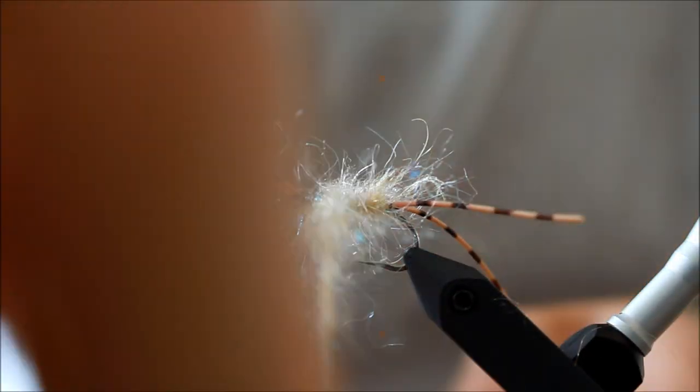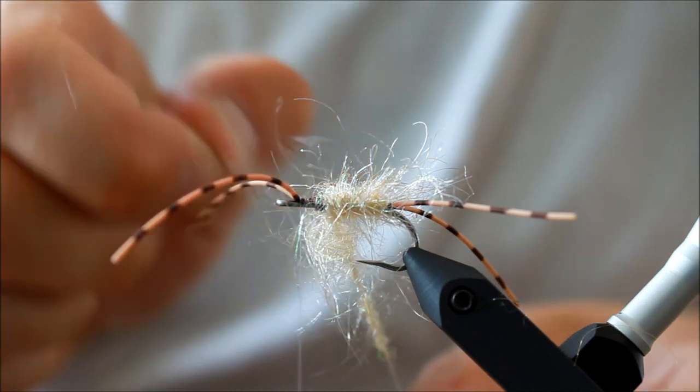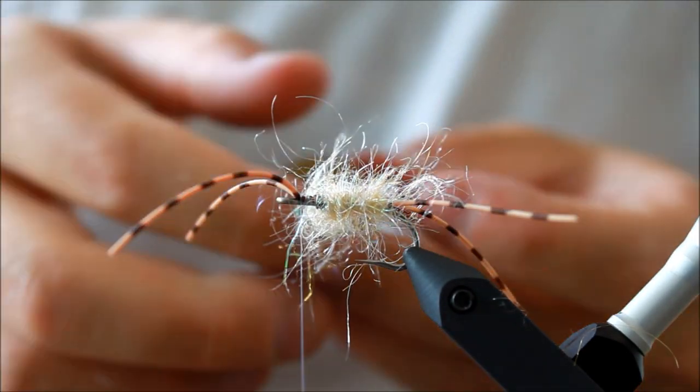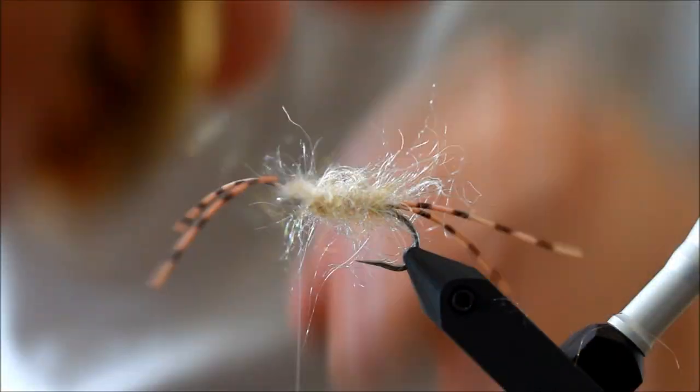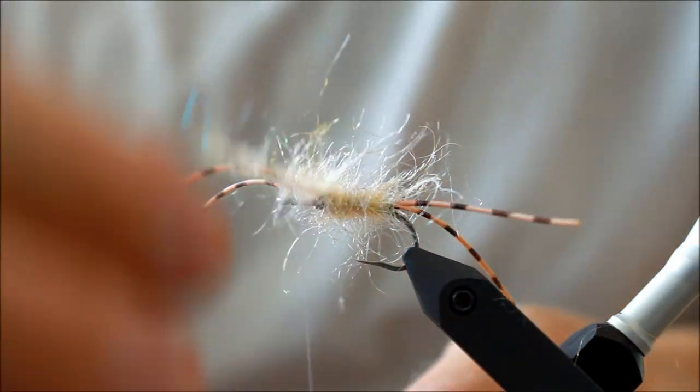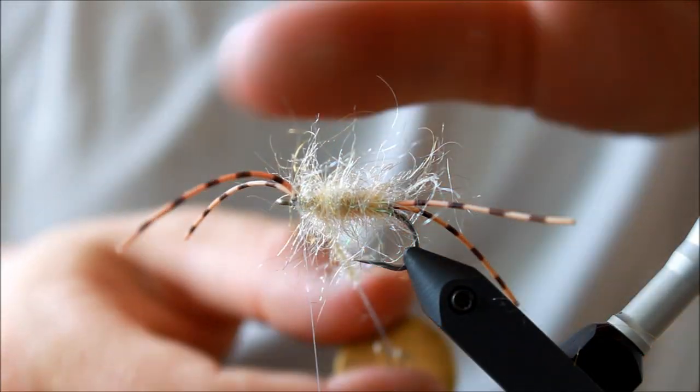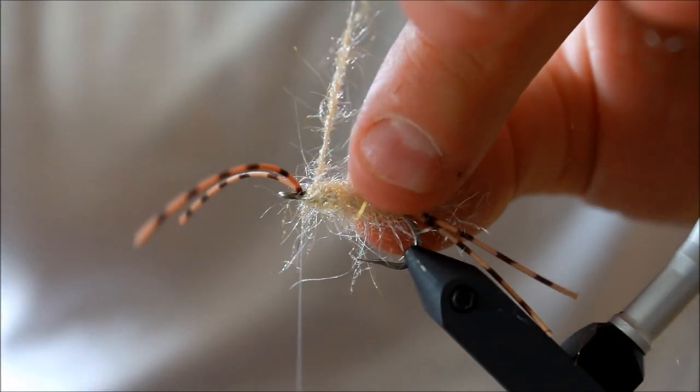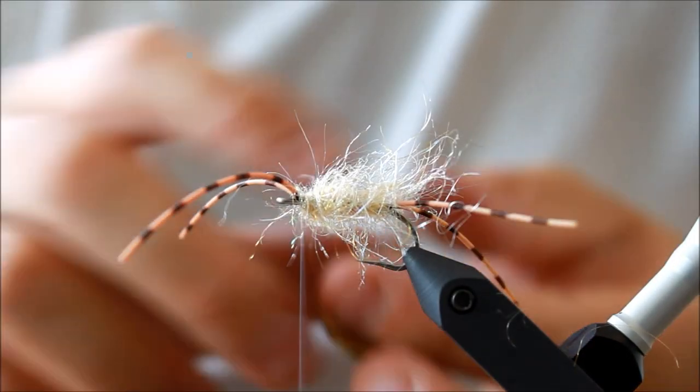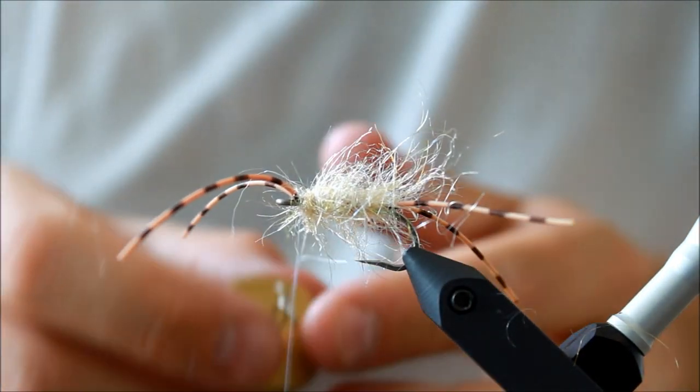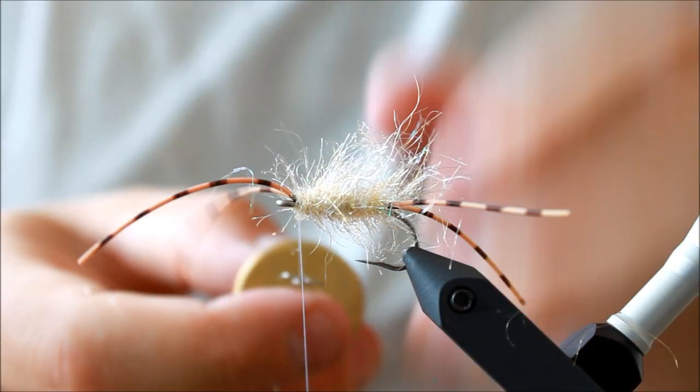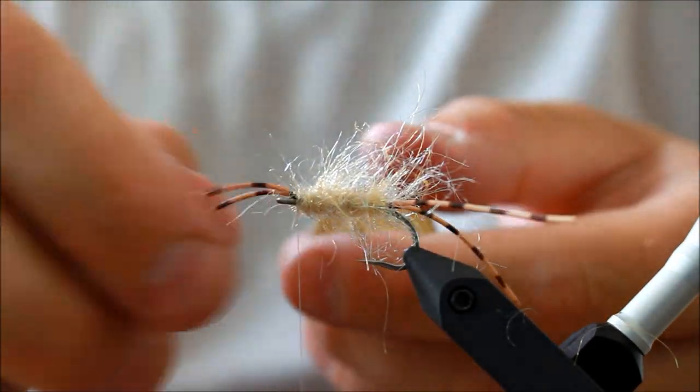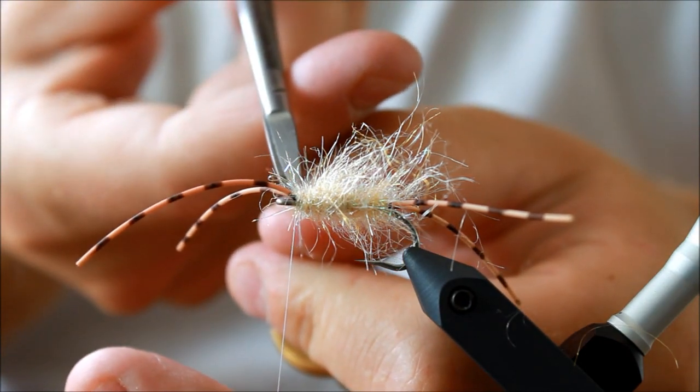This fly doesn't look like anything in particular, any one specific kind of food for a bonefish or a sea trout. But that's one of the strong things that this fly really has going for it. Because it's what I would like to call a multi-imitation. It looks like most things without exactly looking like any one thing. And that is a strength on many patterns, I think, because this generally just looks like food.